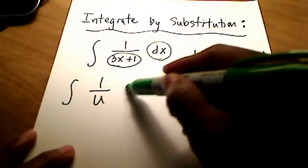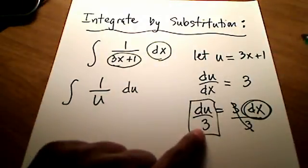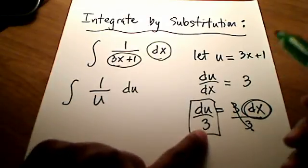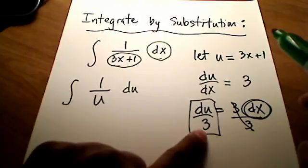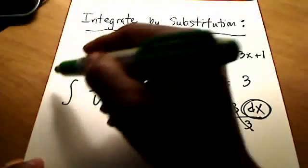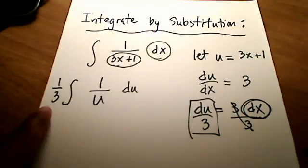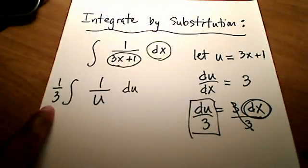Now watch how I do this. Instead of putting du over 3, this 3 on the denominator is really just a constant. So I'm going to move it all the way out of the integral and stick it out front.